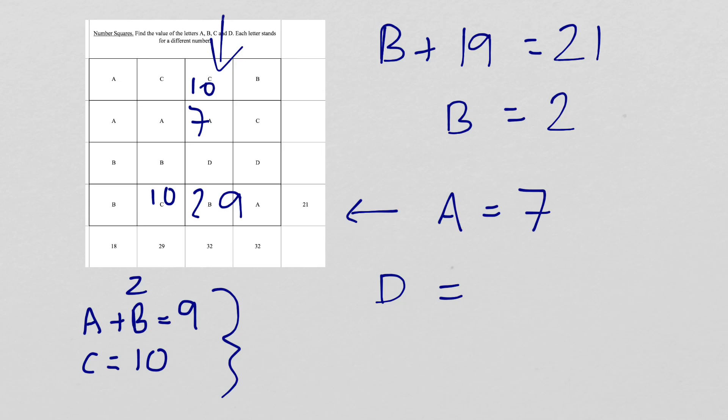So in that case, 17, 19. So d plus 19 equals 32. So that means that d is 32 take away 19, which equals 13.